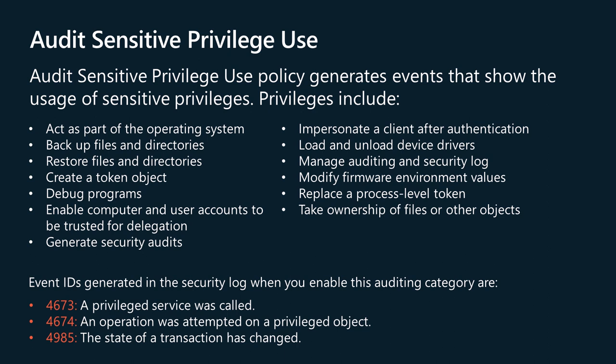The Audit Sensitive Privilege Use Policy generates events that show the usage of sensitive privileges. This is the list of sensitive privileges: Act as part of the operating system, Backup files and directories, Restore files and directories, Create a Token Object, Debug Programs, Enable Computer and User Accounts to be Trusted for Delegation, Generate Security Audits, Impersonate a Client after Authentication, Load and Unload Device Drivers, Manage Auditing and Security Log, Modify Firmware Environment Values, Replace a Process Level Token, Take Ownership of Files or Other Objects. The use of two privileges — Backup Files and Directories and Restore Files and Directories — generate events only if the Audit the Use of Backup and Restore Privilege Group Policy setting is enabled on the computer or device.